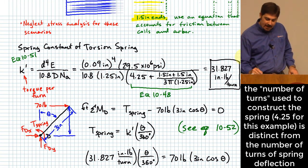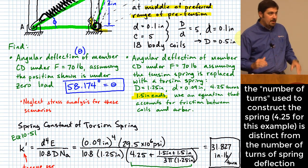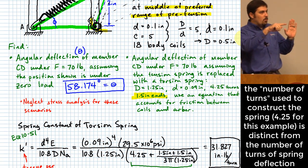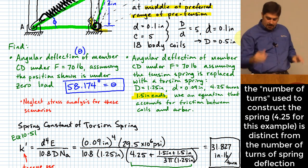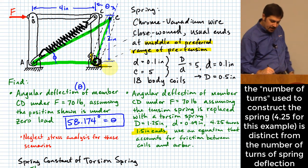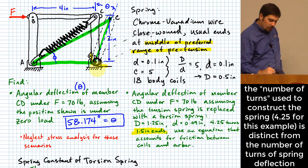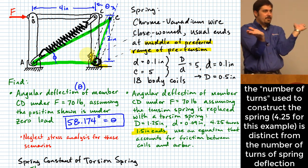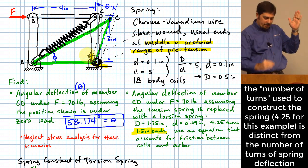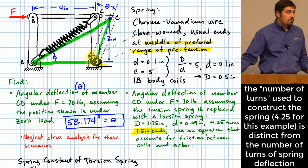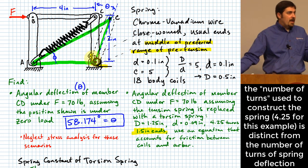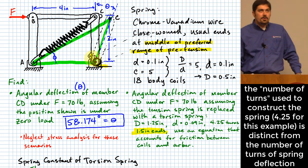Clarifying the 4.25 turns: the spring wire wraps around the arbor four and one-quarter times. If it were exactly four turns the arm would point straight across, so the quarter turn brings the arm up to the correct position as shown. That 4.25 is the number of body coils.